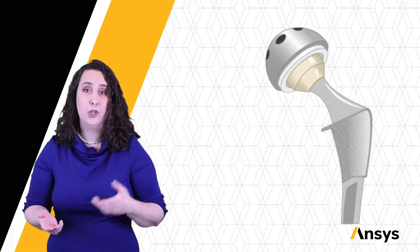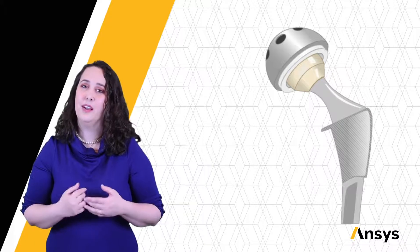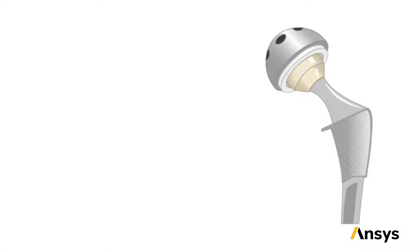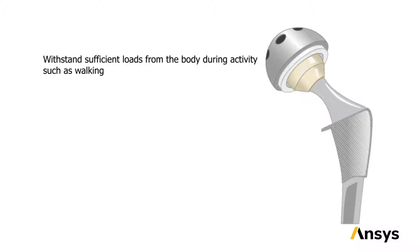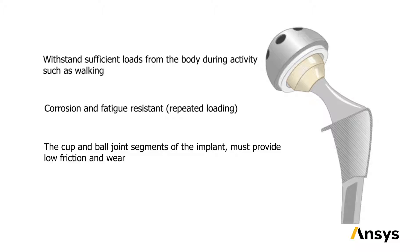The reasons this might be implanted are vast: old age, a bad fracture, arthritis. Maybe you know someone in your family or group of friends who's needed their hip replaced. Whatever the reason, this hip implant must be able to withstand sufficient loads from the human body during activities such as walking. It must be corrosion and fatigue resistant — fatigue meaning withstanding repeated loading. The cup and ball joint segment of the implant must provide low friction and low wear. If I'm having this implant put in because I lost my natural cartilage in my hip due to arthritis, I want to make sure that my new joint will move smoothly.